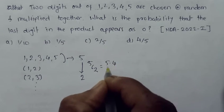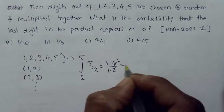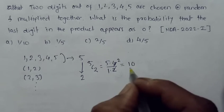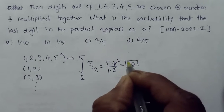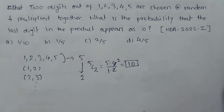This can be done in 5C2 ways, which is 5 × 4 divided by 1 × 2. This gives me 10. So there are 10 pairs I can make using the digits 1 to 5.